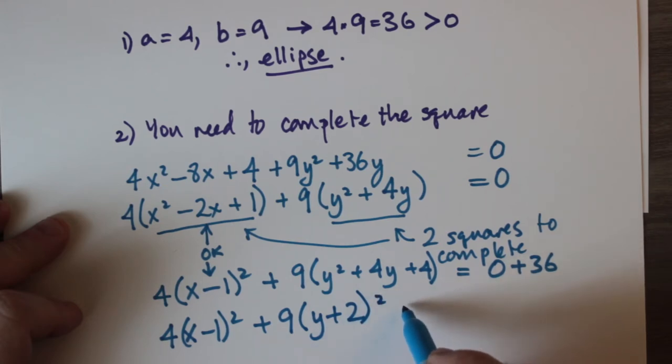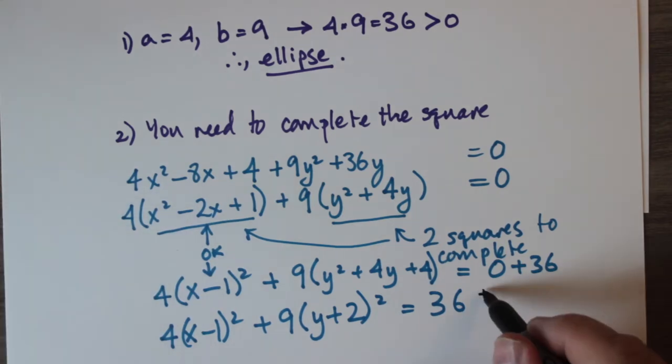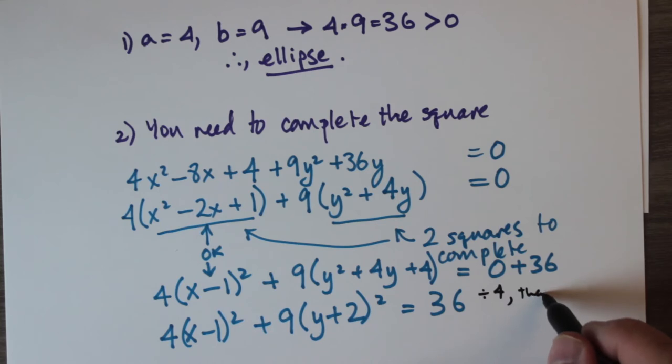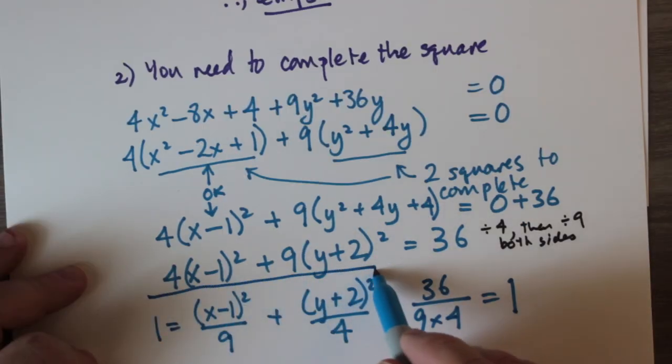So we have 4(x - 1)² + 9(y + 2)² = 36. If we divide everything by 36, that means (y + 2)² is divided by 4 and (x - 1)² is divided by 9. And 36 divided by 36 is going to be 1.